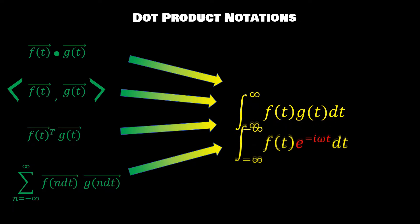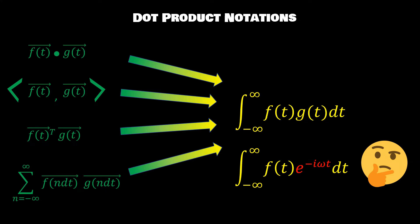You may realize that the form that this continuous dot product takes looks pretty similar to the Fourier transform, and that is a very good observation. This might get you thinking, does the Fourier transform have a deeper connection with the dot product that we usually associate with vector multiplication?